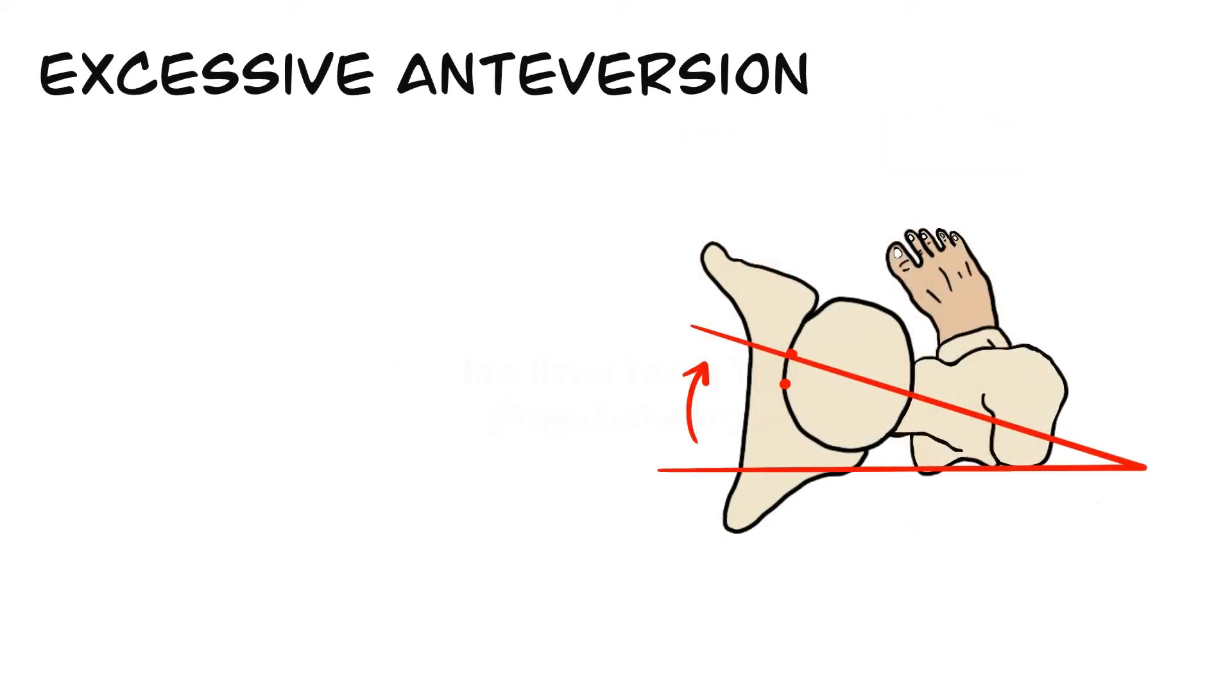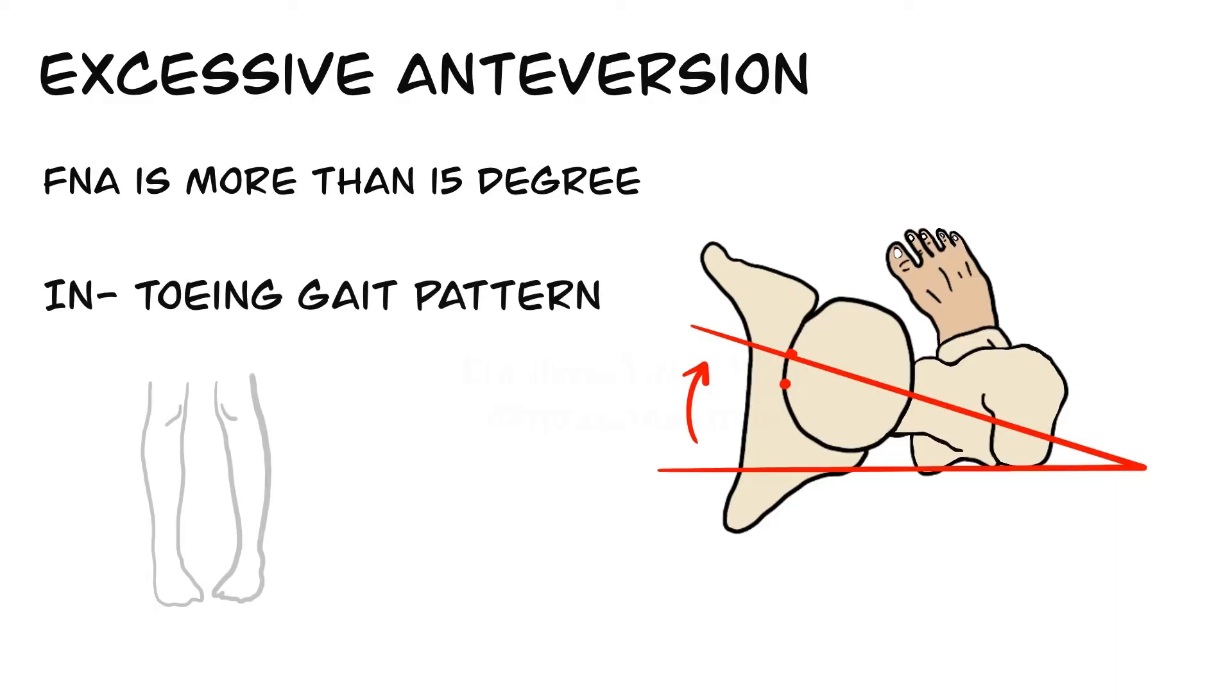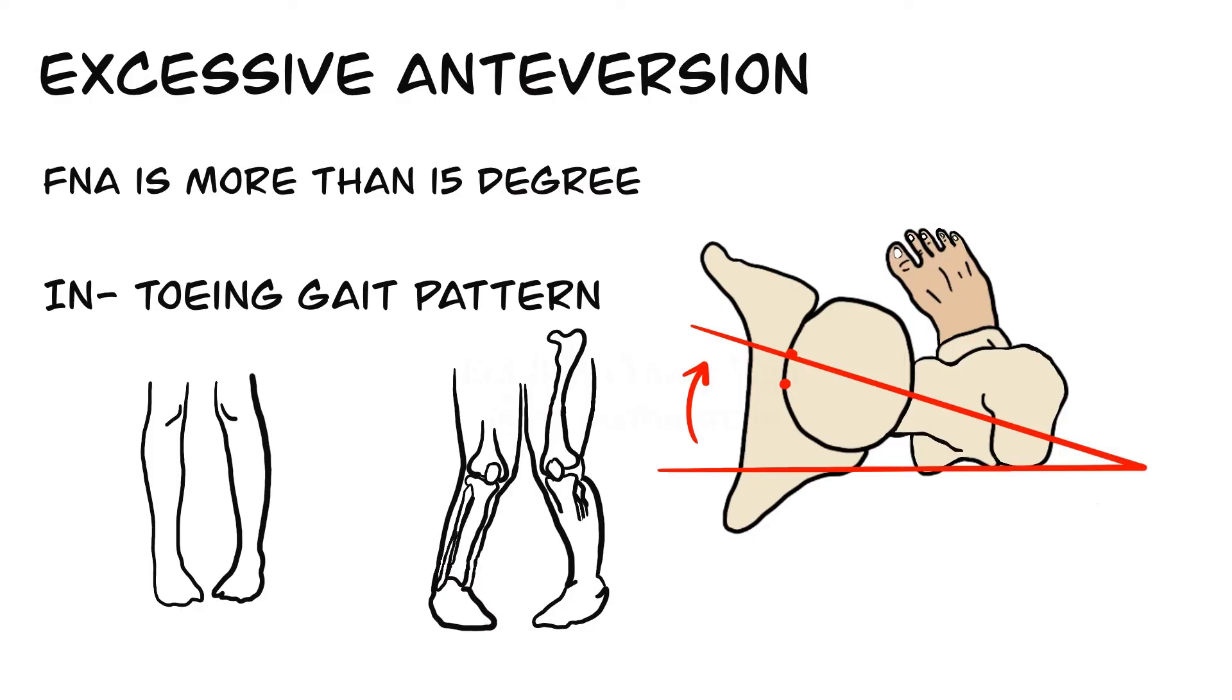If the femoral anteversion angle is greater than 15 degrees, that will result in the femoral head being excessively rotated anteriorly. The patient will be walking with their toes turned in position, which is in-toeing gait pattern, to keep the femoral head more stable in its socket. Walking in this position for long periods of time causes the hip internal rotators to shorten. In this case, it restricts the external rotation of the hip.